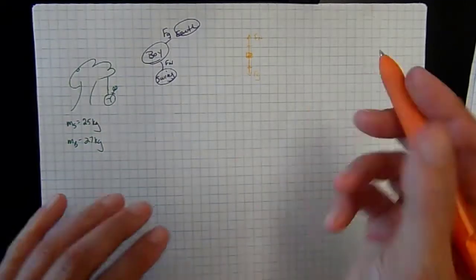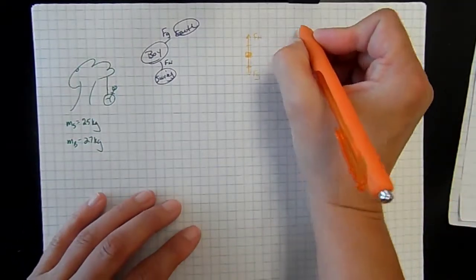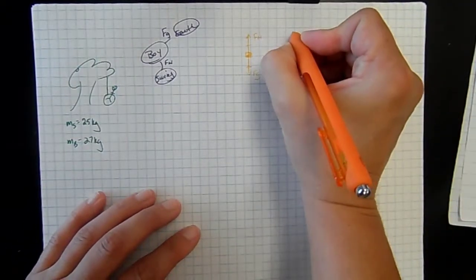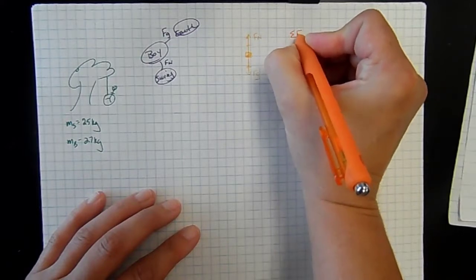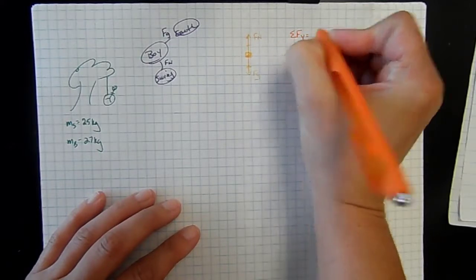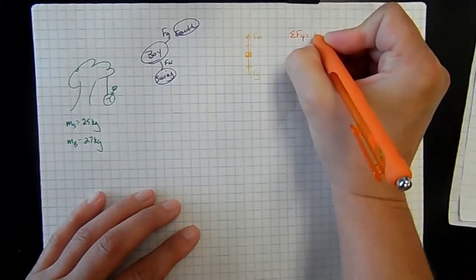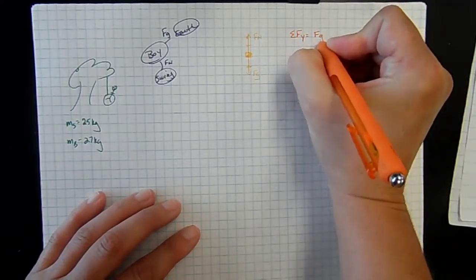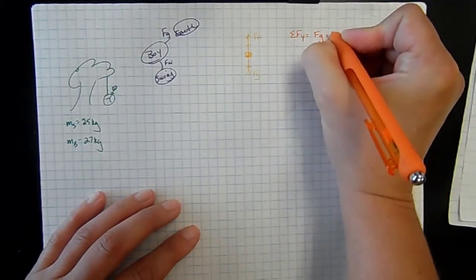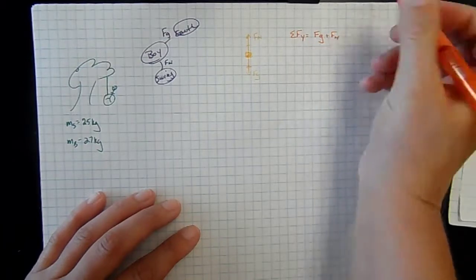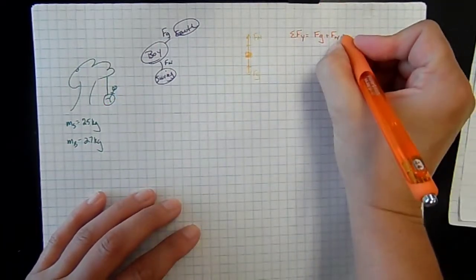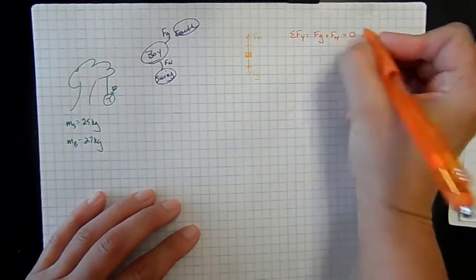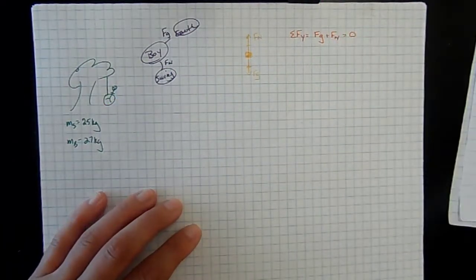We can represent this in our force sum equations. The sum of the forces acting in the y-direction are going to be gravity and normal, and since he's not moving, they are balanced and equal to zero.